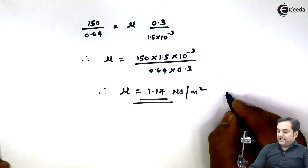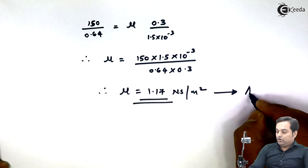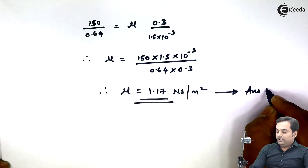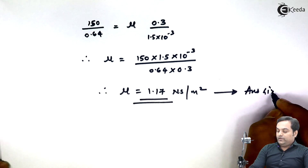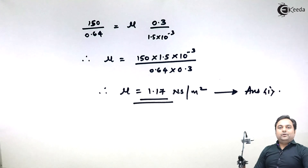Therefore, the dynamic viscosity of the oil is 1.17 N·s/m². With this we complete the problem.